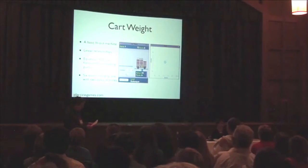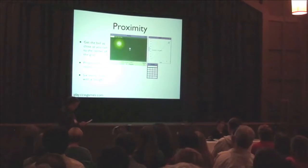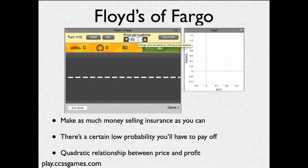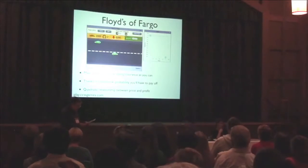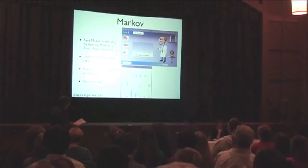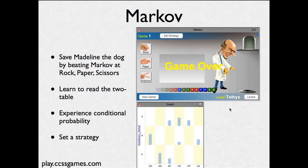Cart Weight is a gussied-up in-out machine — given the number of bricks, compute the weight. But it can be challenging when there are two sizes of bricks. At the heart of Proximity is a proportional relationship between how far you pull back on the ball and how far it goes; you have to measure distance and then do a computation. In Floyd's of Fargo, you have to figure out the optimum price for some tire insurance — zero is not a good price. This model involves a quadratic equation, and randomness of the occurrence of flats complicates things. To win at Markov, you have to save Madeline the dog by beating Dr. Markov at rock, paper, scissors. There are patterns to discover using a two-way table.